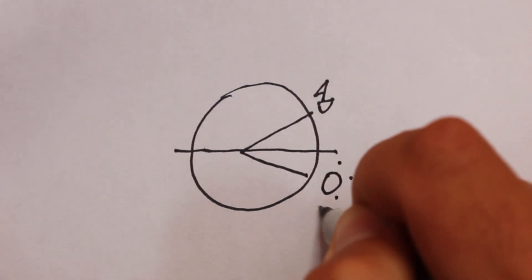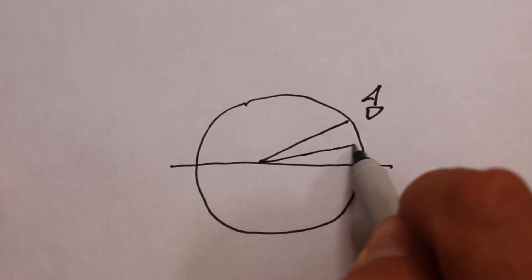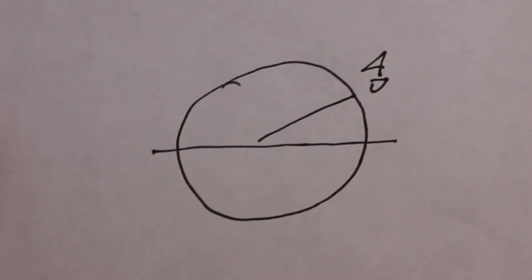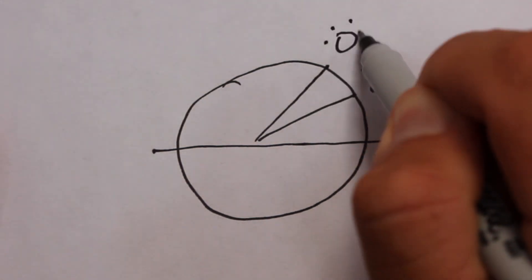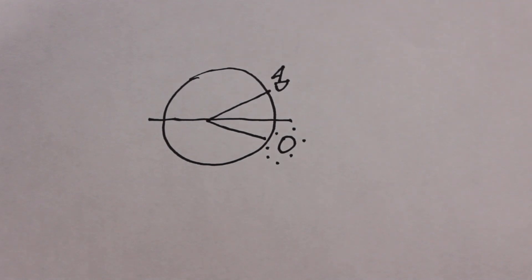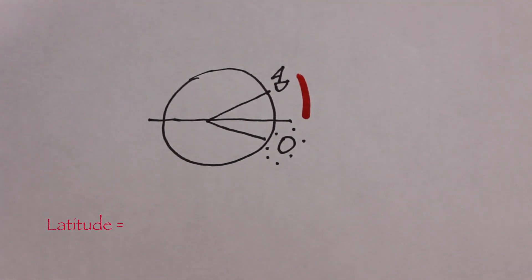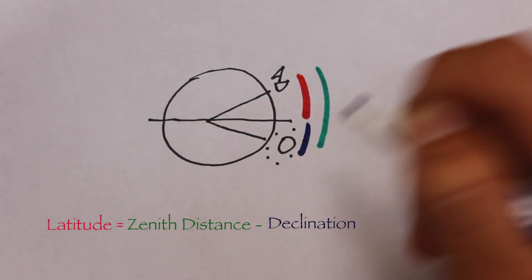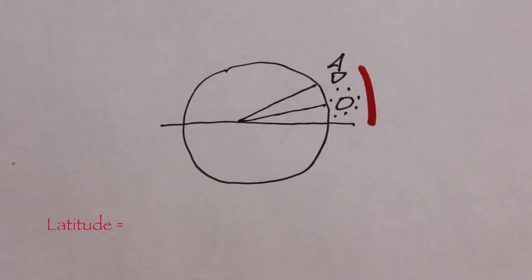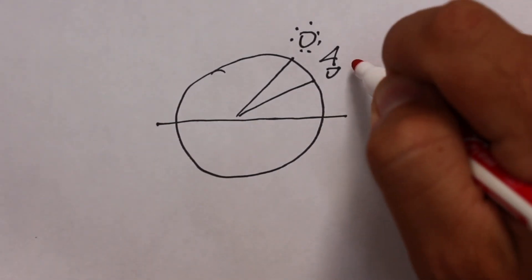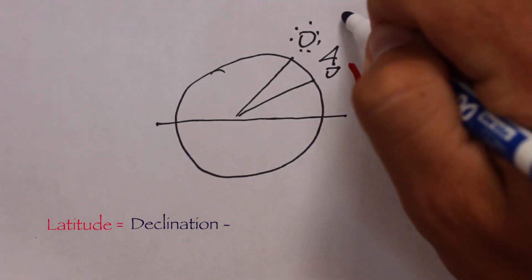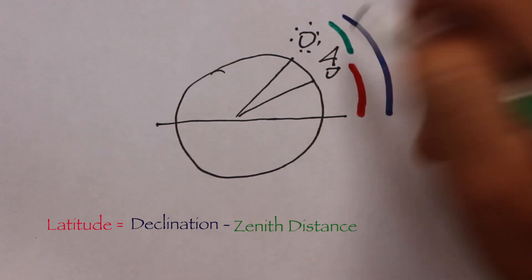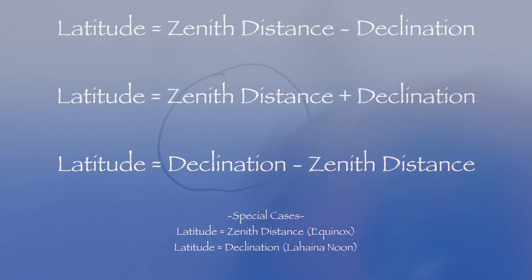Aside from the two special cases, you can draw the relationship between the equator, your ship, and the geographic position of the sun in three ways. In the first case, the sun's geographic position could be in the opposite hemisphere of your ship — latitude equals zenith distance minus declination. In the second case, your ship and the sun's geographic position are in the same hemisphere but the sun is further from the equator — latitude equals zenith distance plus declination. In the final case, latitude equals declination minus zenith distance. If you make the drawing every time, you can't go wrong.